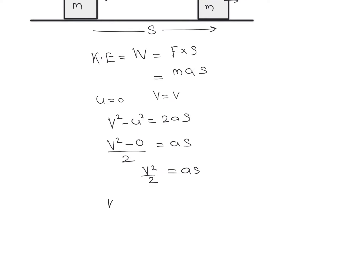The value of kinetic energy, or work done, equals F × S = m × a × S. Substituting a × S = V²/2, we get kinetic energy equal to half × m × V². So for the calculation of kinetic energy, we will always use the equation: KE = ½mV².